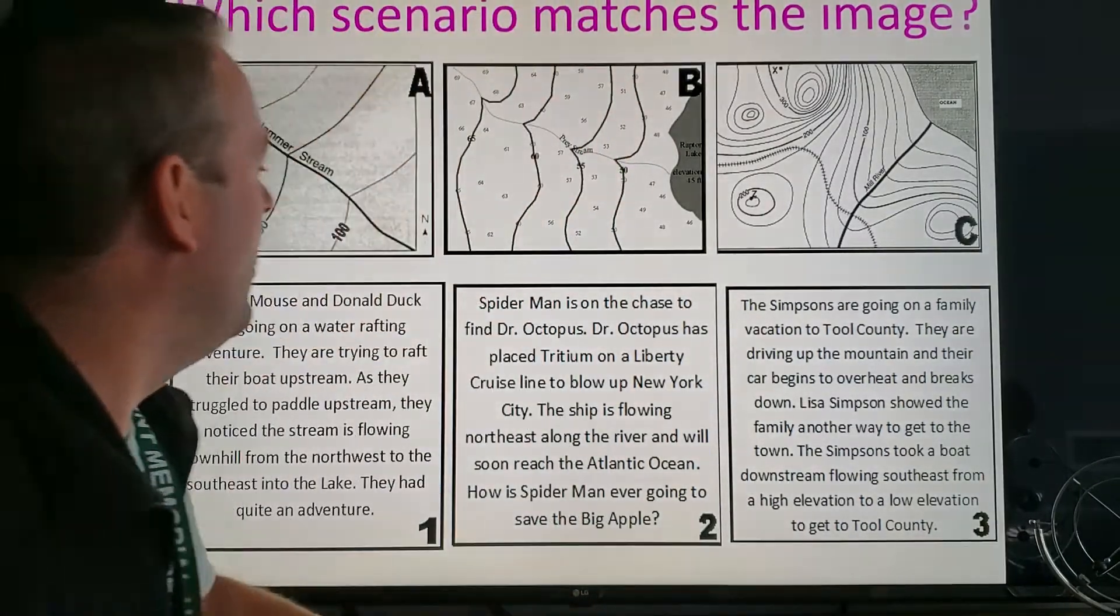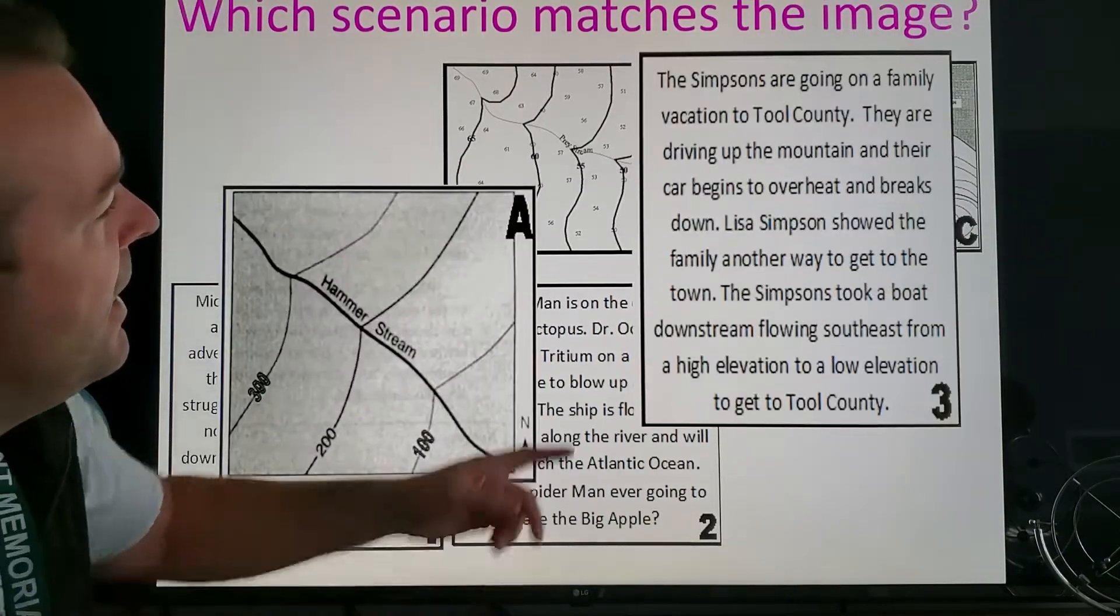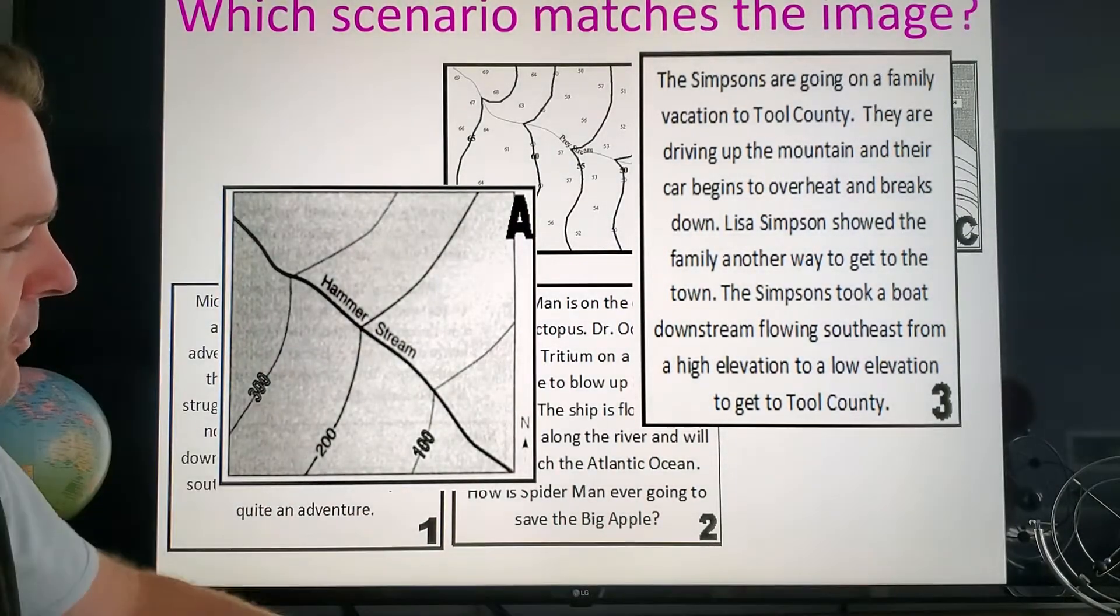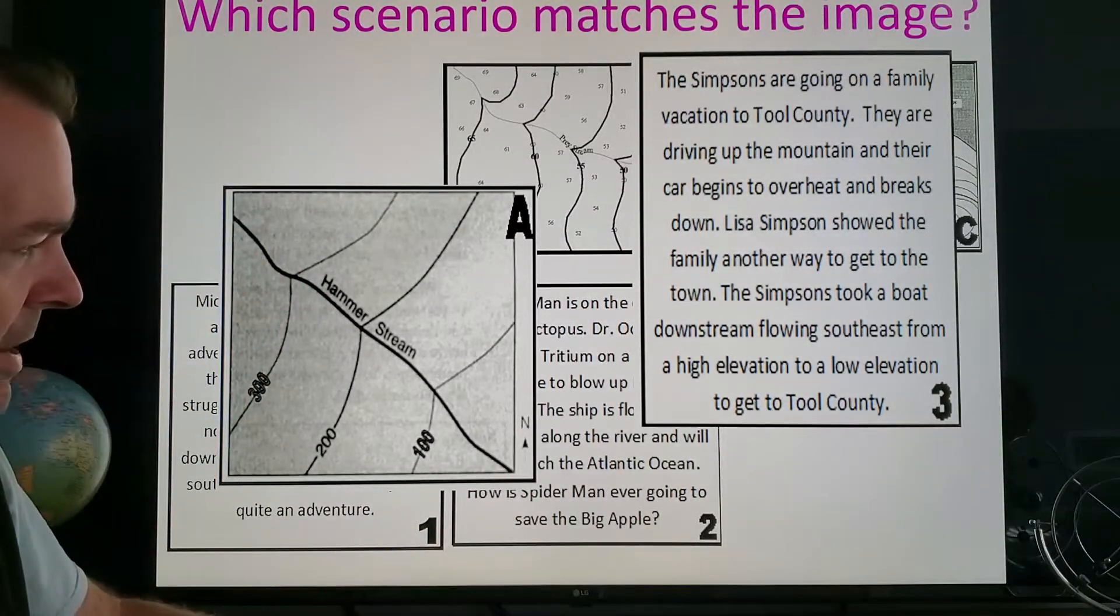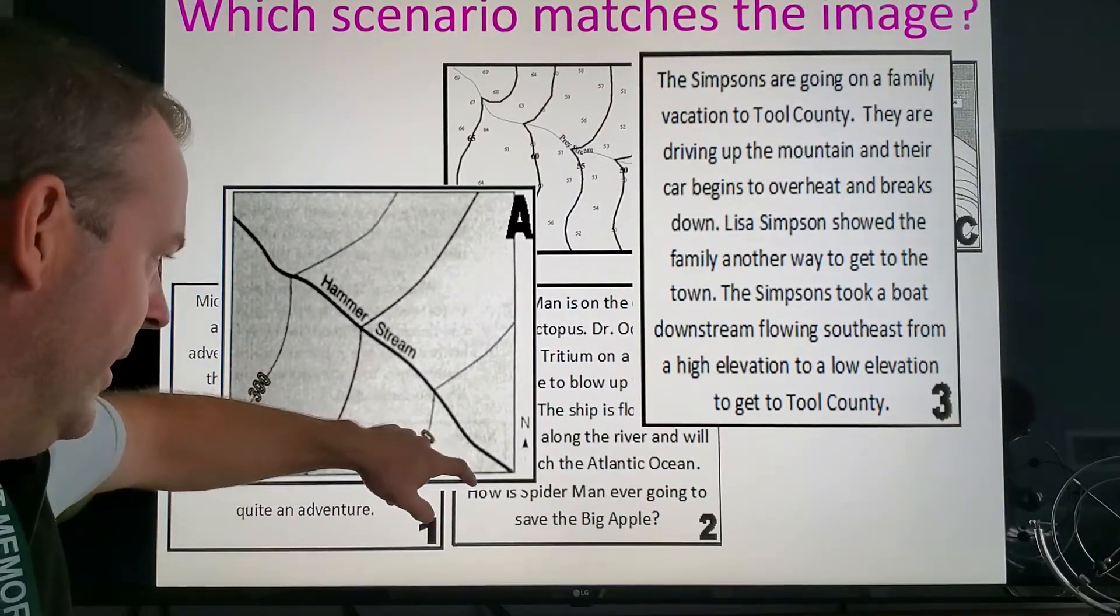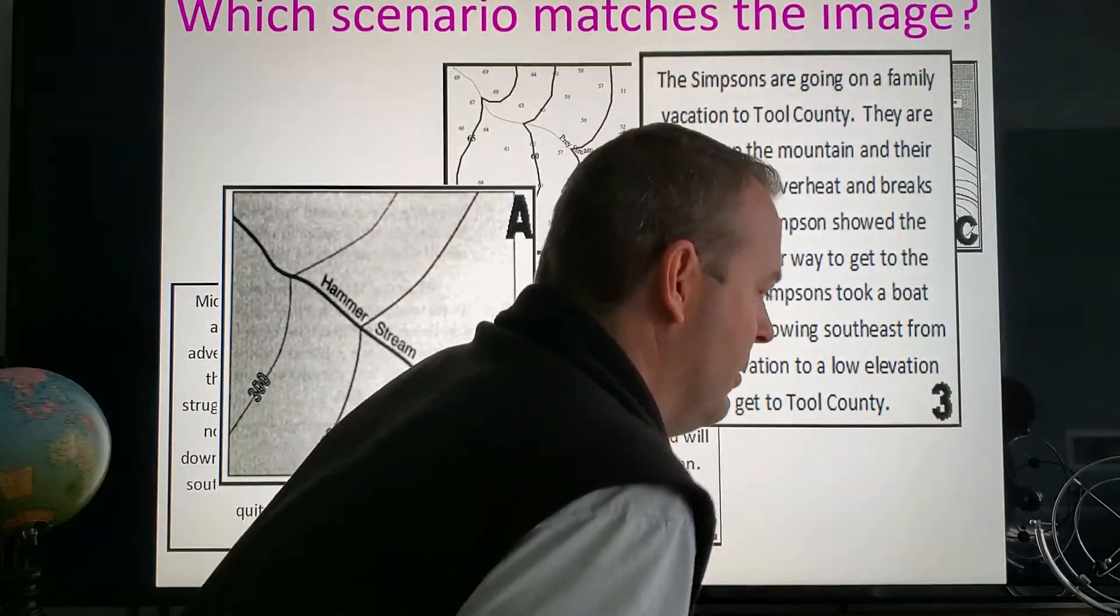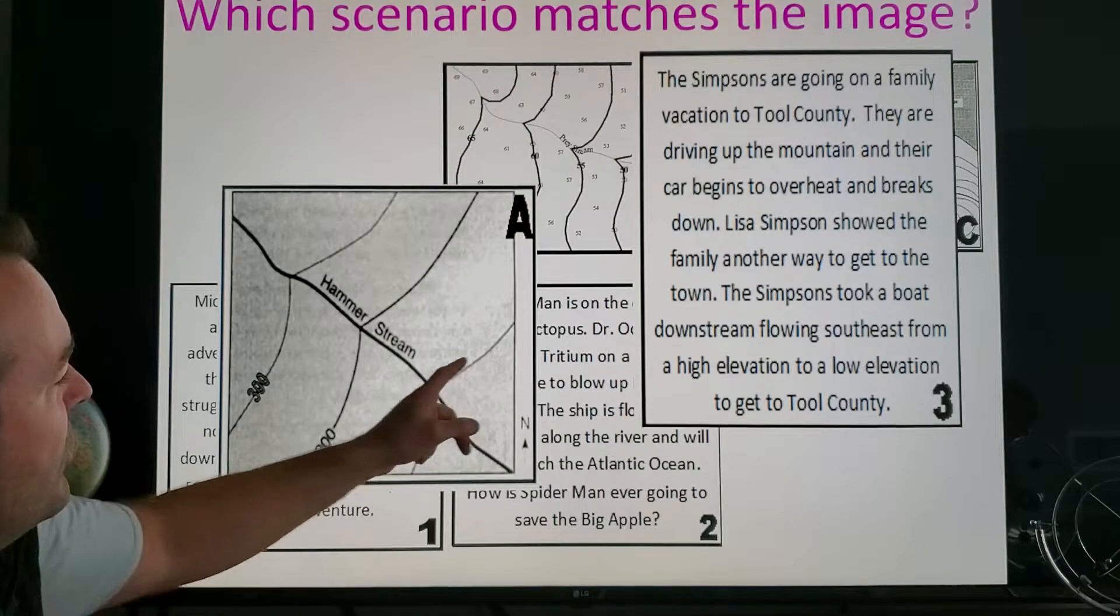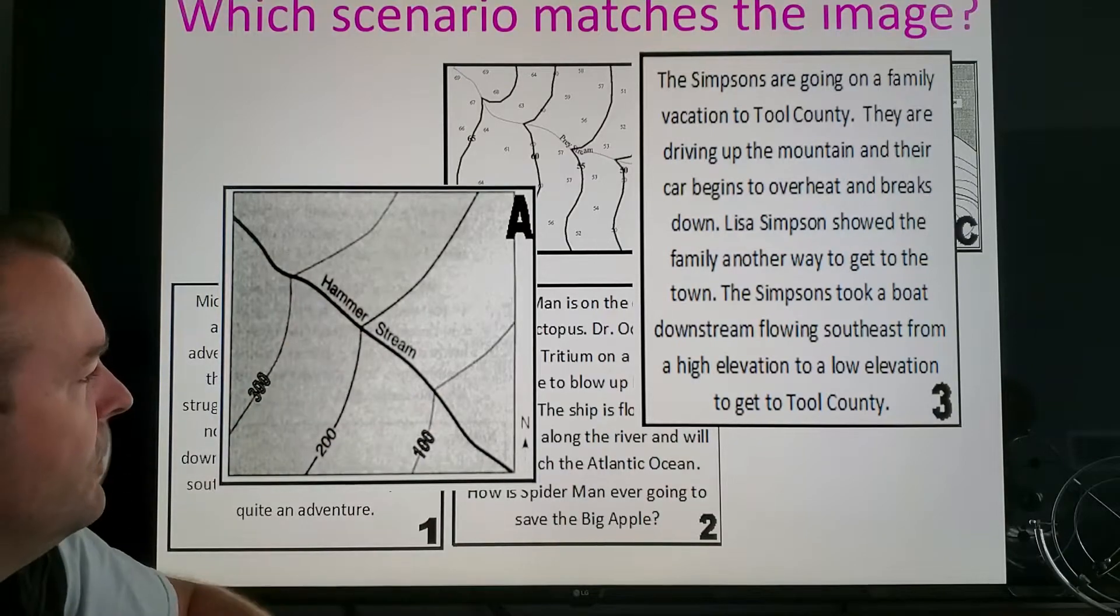The first one, the Simpsons are going on a family vacation to Tool County. They're driving up the mountain and their car begins to overheat and breaks down. Lisa Simpson showed the family another way to get to town. They took a boat downstream flowing southeast from a higher elevation to a lower elevation. You can see the numbers decreasing, so obviously water flows downhill. Another thing, where the contour lines cross the river they kind of bend this way—they point uphill and the river of course flows the opposite way.